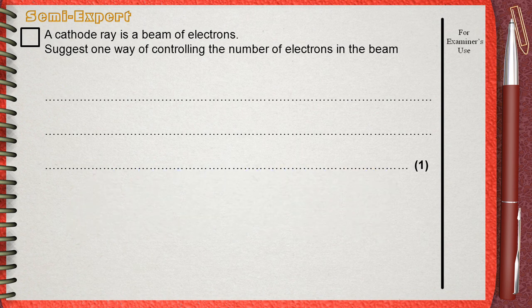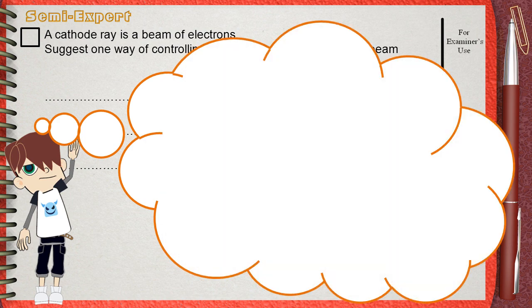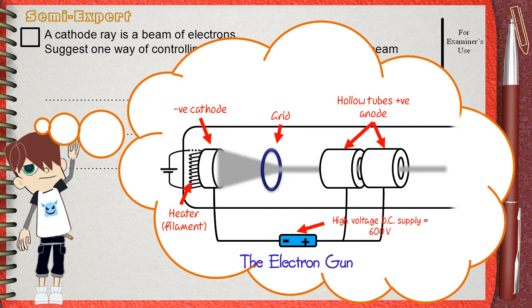The part of the CRO that is responsible for producing electrons is the electron gun, and this includes the heater, the cathode, the grid, and the tubes.